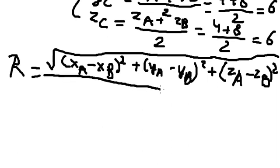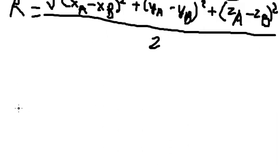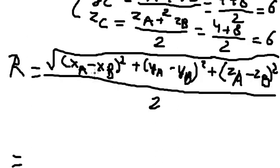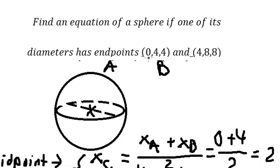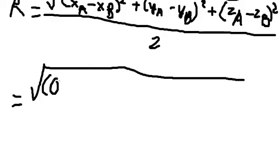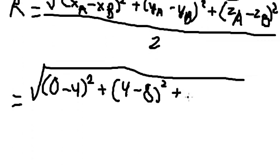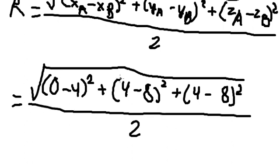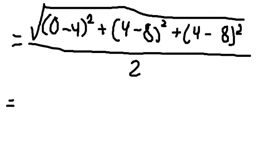We have the points (0,4,4) and (4,8,8). Substituting: (0-4)² is 16, (4-8)² is 16, and (4-8)² is 16. So √(16 + 16 + 16) / 2 = √48 / 2. We calculate and get 2√3. The radius is 2√3.